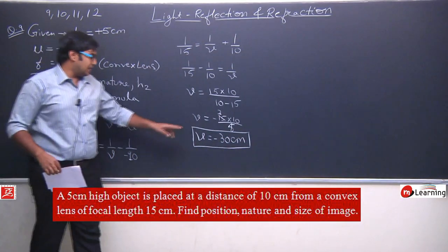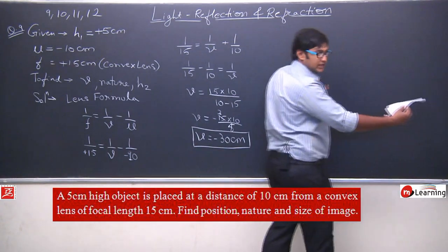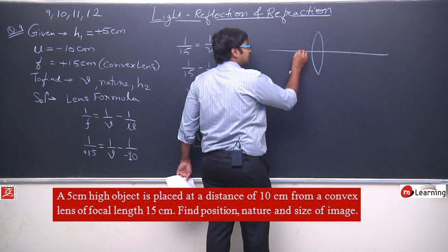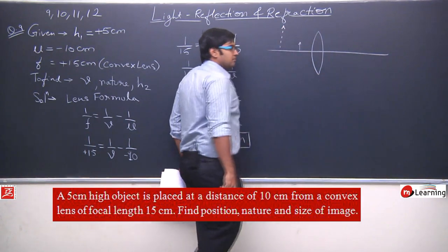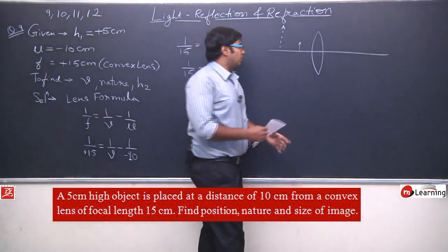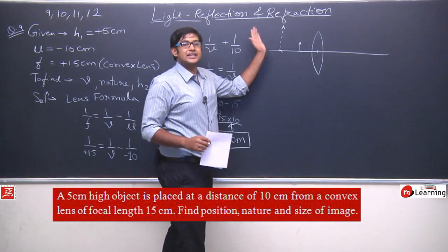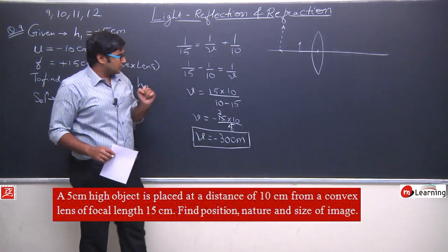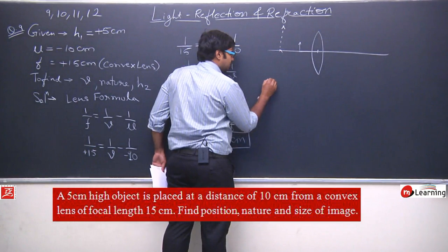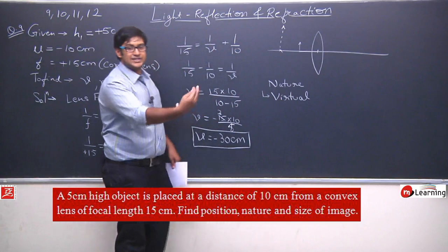Position of the image mil raha hai minus 30 centimeters. Iska matlab jo image form ho rahi hai, woh bhi lens ke left side mein form ho rahi hai. For example, agar ye lens hai, is lens mein agar object yahan rakha hai, to iska image bhi isi side form ho rahi hai. Object distance 10 centimeters tha, lekin image form ho rahi hai 30 centimeters pere. Image negative direction mein hai, iska matlab image virtual hai.